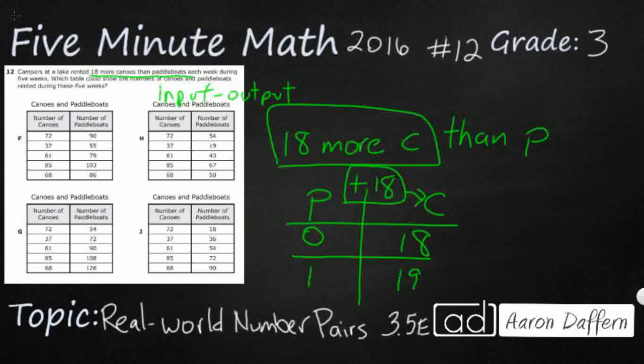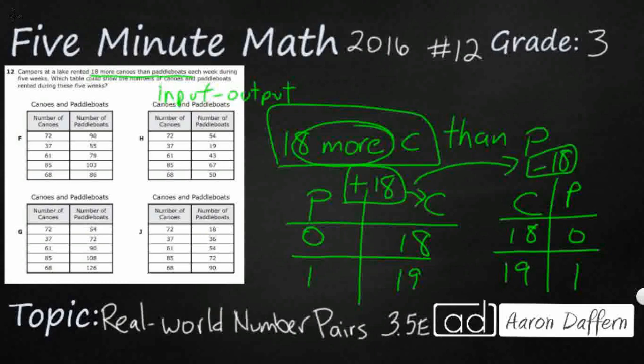Now I did that just because there's 18 more canoes than paddle boats. It made sense to start that way, but if I were to flip it, what happens if I were to do this? Take my same numbers, 18 and 0, 19 and 1, we can keep going. You notice now we've got a minus 18. So it just kind of depends on which direction we're going, but you've got your inverse operations here. These are your opposite inverse operations.